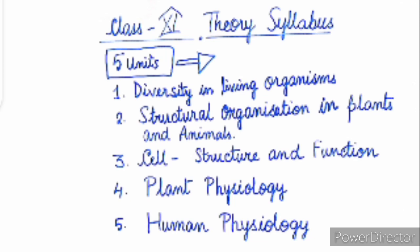So, fourth unit of plant physiology is complete with five main chapters. I hope it is clear. Now, coming to the fifth unit. Fifth unit contains human physiology which is again a very important chapter in this course structure.